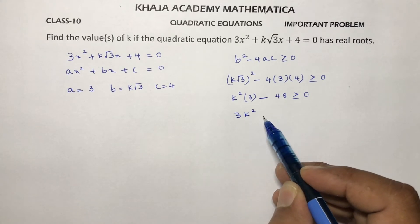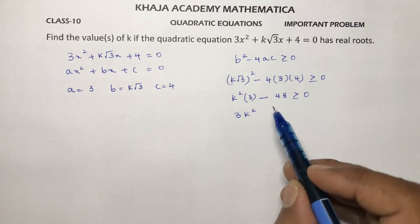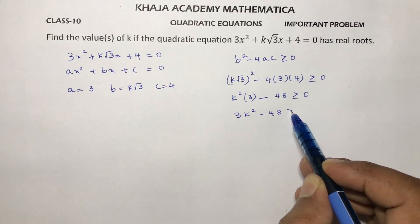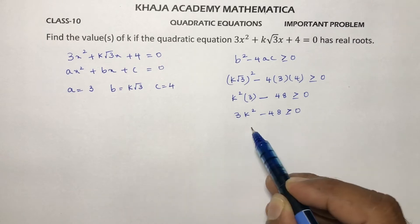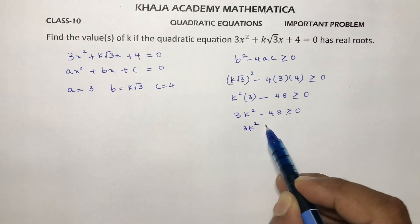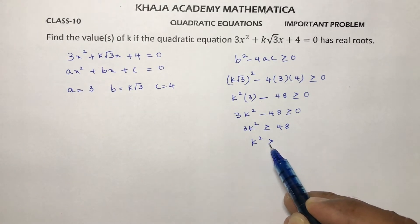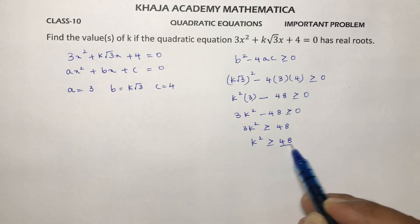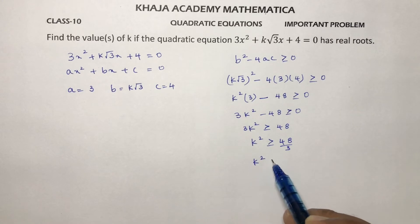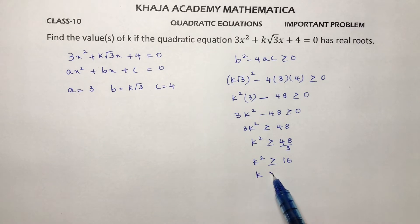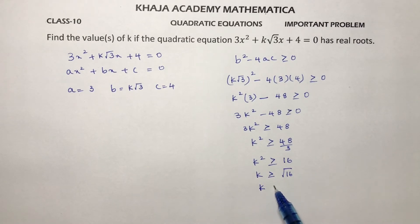So 3k² ≥ 48, which means k² ≥ 16. Therefore k ≥ √16, giving k ≥ ±4.